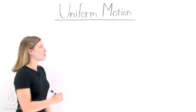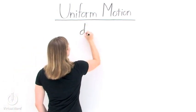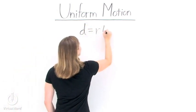What is the formula for uniform motion? The formula for uniform motion is d equals r times t.